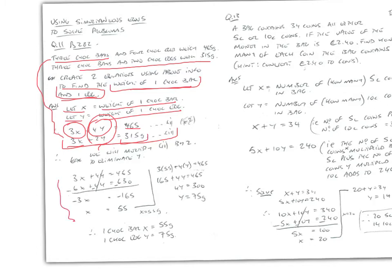We have 3x+4y = 465, and multiplying the second equation by 2 gives 6x+4y = 630. We change signs to add and cancel, giving x = 55, so the chocolate bar weighs 55 grams. Substituting x=55 into the equation gives y = 75 grams. Therefore one chocolate bar weighs 55 grams and one chocolate egg weighs 75 grams.